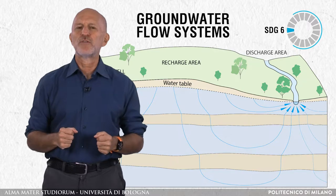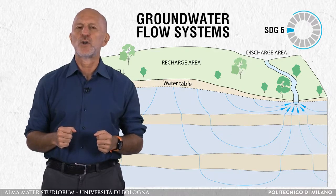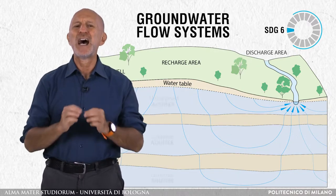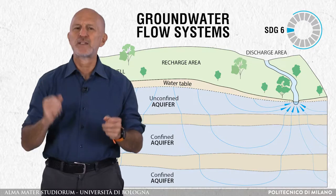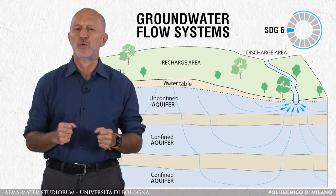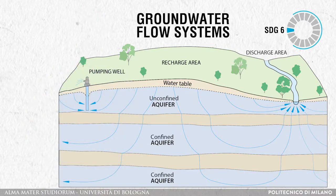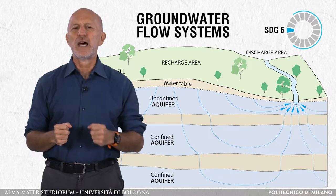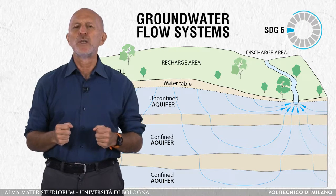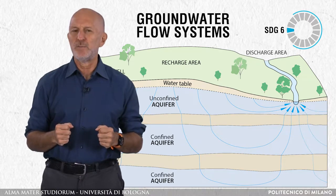Do you know where groundwater is located? The natural underground geological reservoirs of groundwater are termed aquifers, from ancient Latin meaning conveyors of water. Typical examples of aquifers are sands, gravels, or karst units.